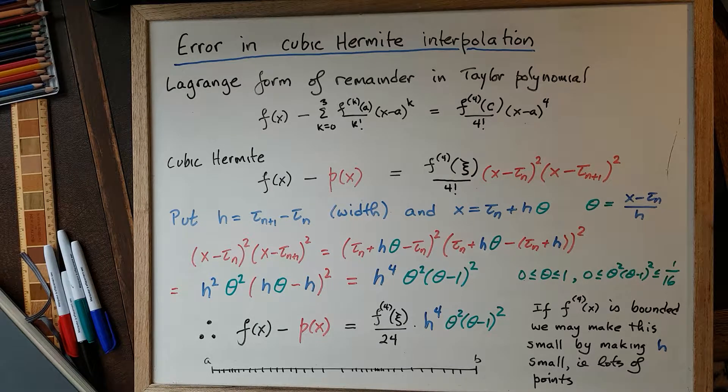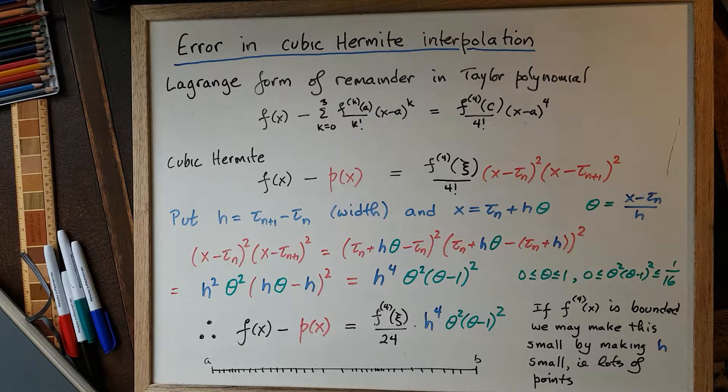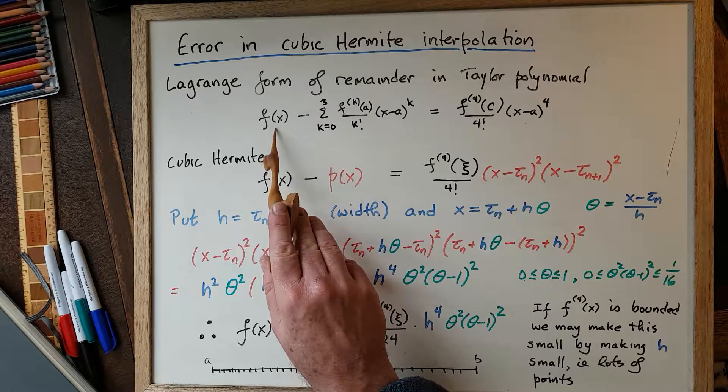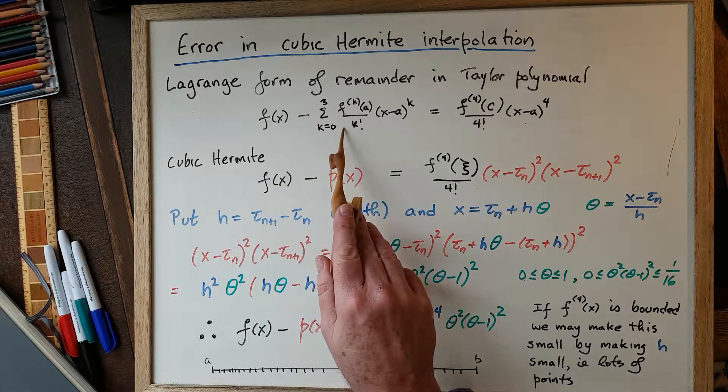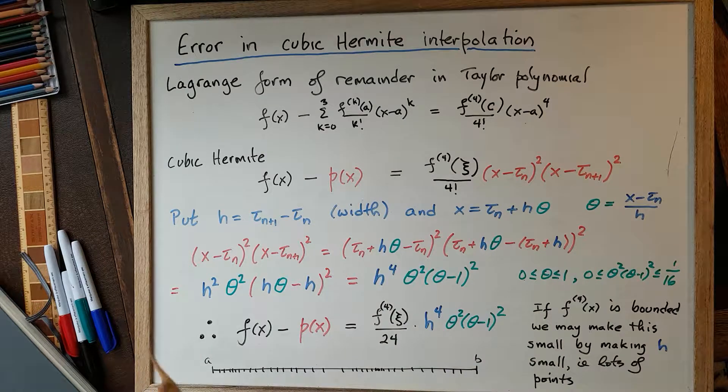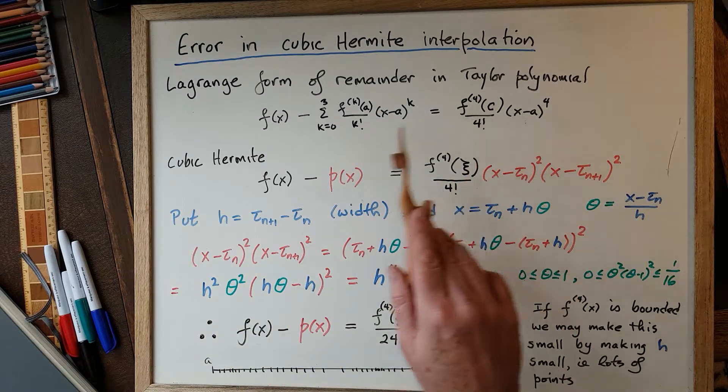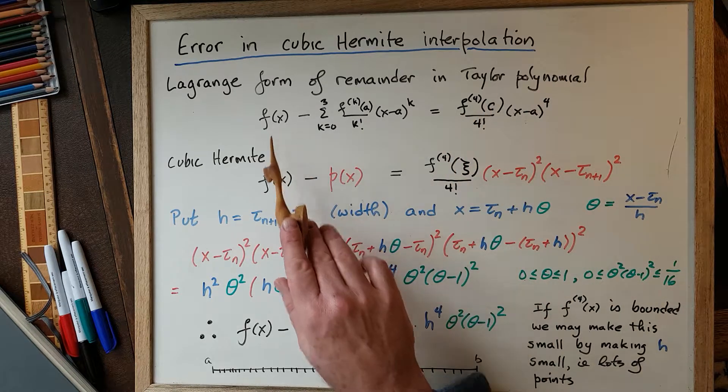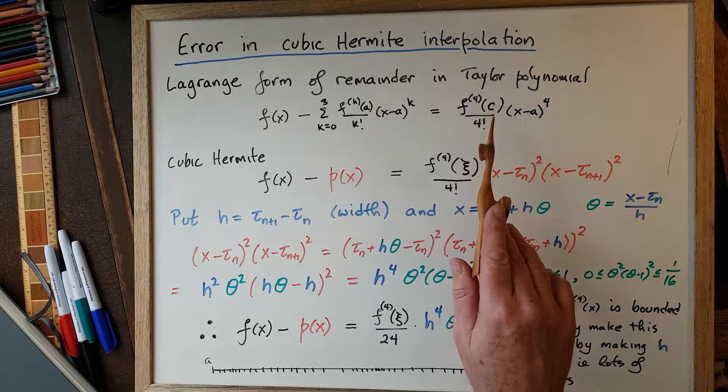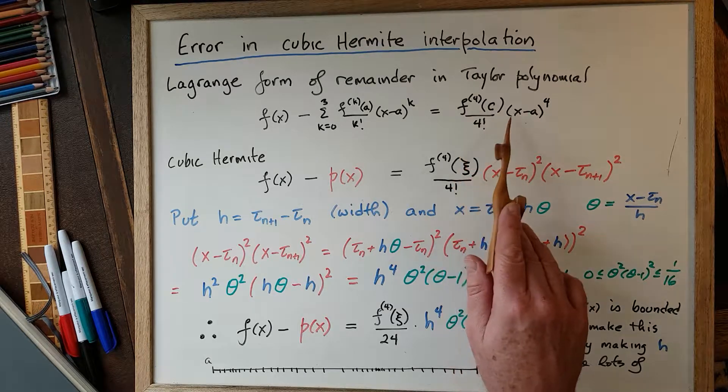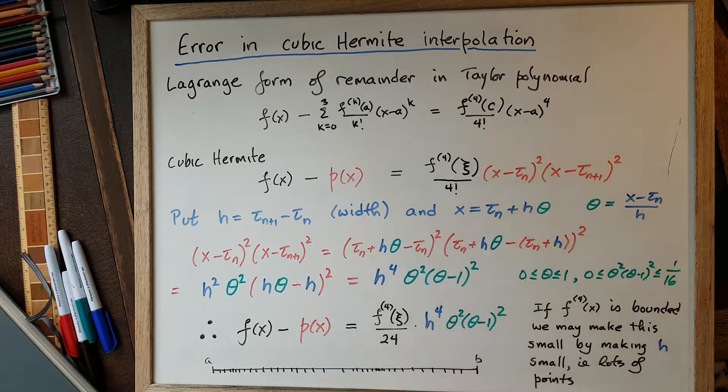Just to remind you that the Lagrange form of the remainder in a Taylor polynomial, for example if we approximate a function f by its third degree Taylor polynomial expanded about some point x equals a, the Lagrange form says that this error is proportional to the fourth derivative of the function f evaluated at some point c, which is between a and x, divided by 4 factorial times (x - a) to the power 4.